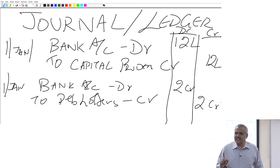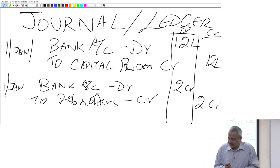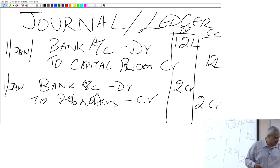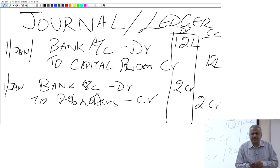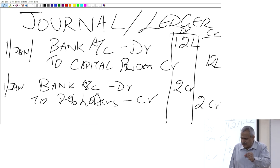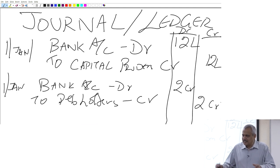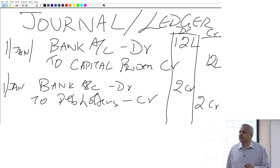Ledger comes as the next stage of account preparation. What we do in a ledger is group all these accounts together. Imagine a company — every minute there will be hundreds of transactions happening. At frequent intervals — every week or every month depending on the size of the organization — you consolidate all these. I pick up whichever transaction had bank mentioned and group them, whichever had capital I group them, whichever had purchases I group them. This grouping together is called a T-account or ledger account.